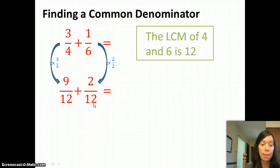Now that we have the same denominator, we know how to add these. We simply add the 9 and the 2 and keep the 12 on bottom. So we end with a result of 11/12.